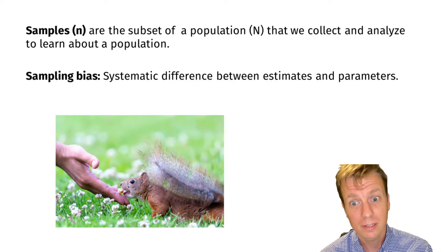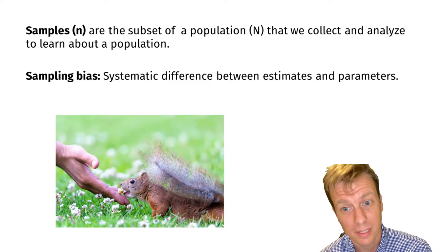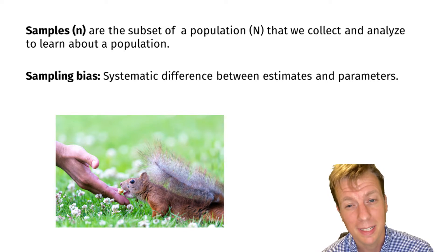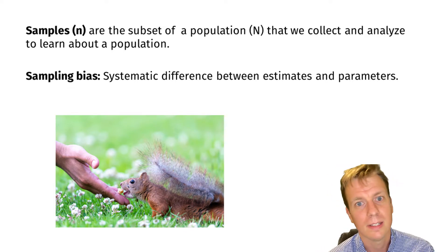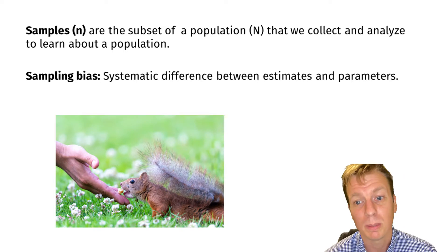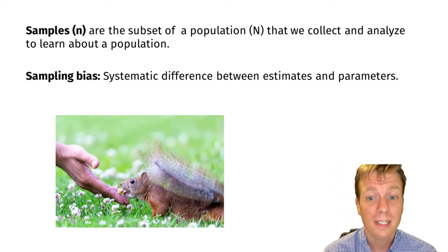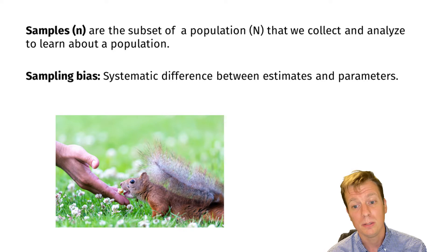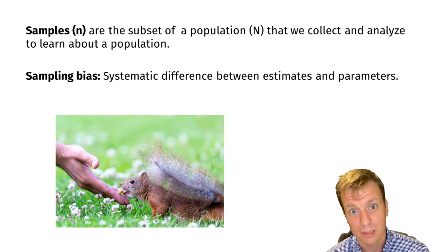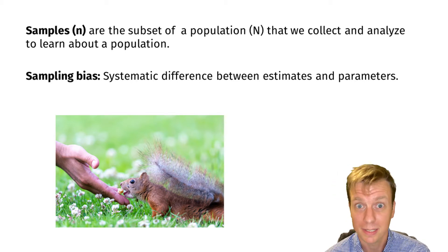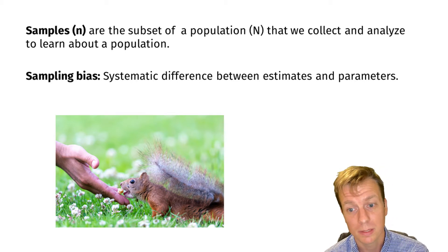Samples are by definition subsets of a population. However, samples in and of themselves are not necessarily representative of that population. When taking a sample, it's important to reduce what is called sampling bias, and sampling bias is the systematic difference between estimates and parameters.